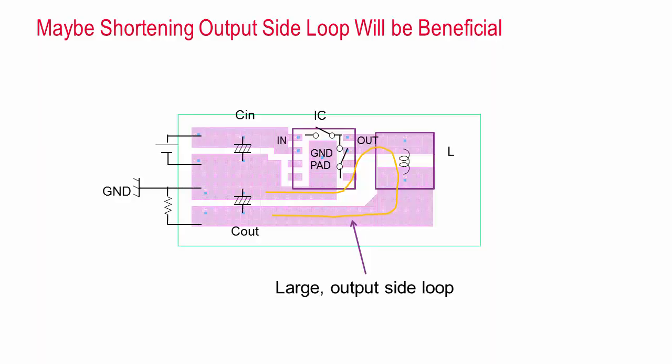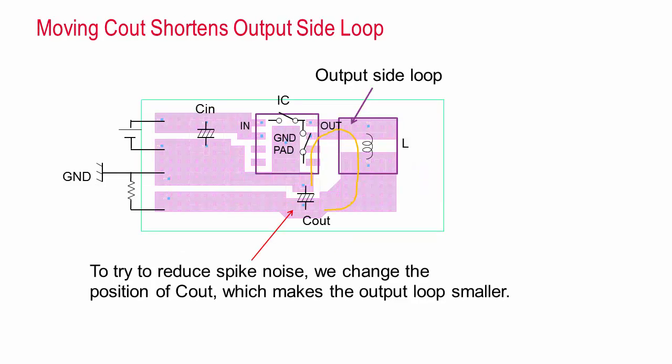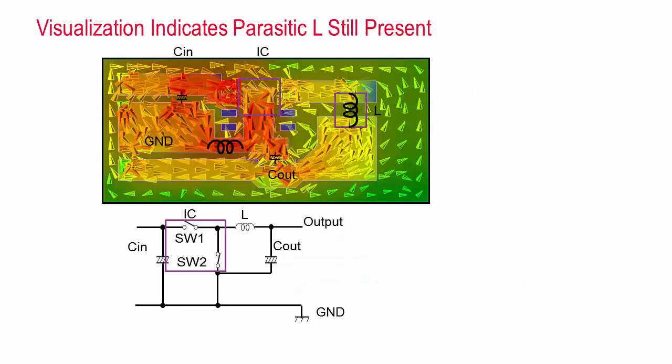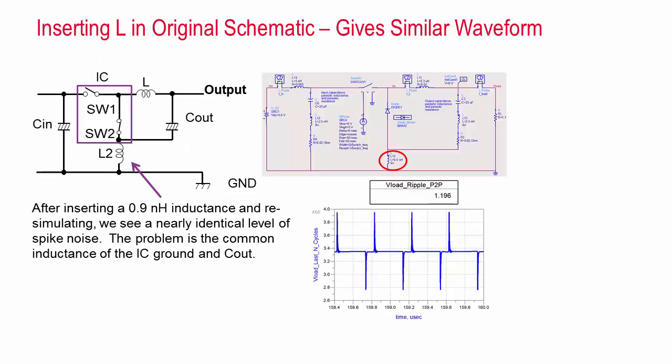Let's try to reduce the spike noise by moving the output capacitor, which shortens the output side loop. However, this actually makes the spike noise higher. Visualization indicates that the parasitic inductance is still present, but its position in the schematic has just shifted. If we go back to the original schematic and insert a 0.9 nanohenry inductor, we can see very similar results.